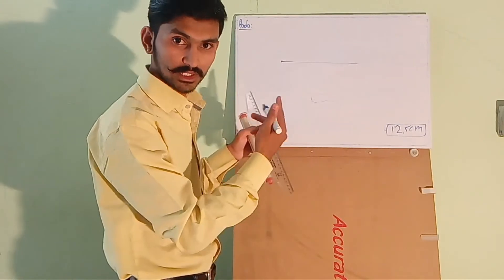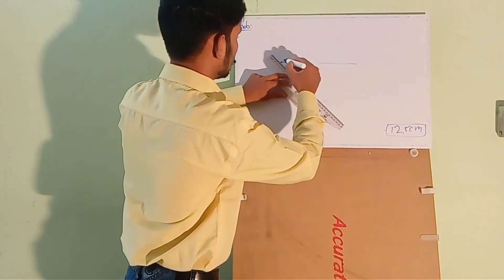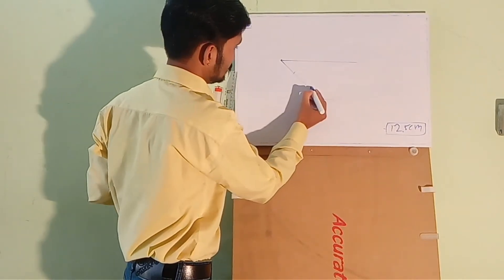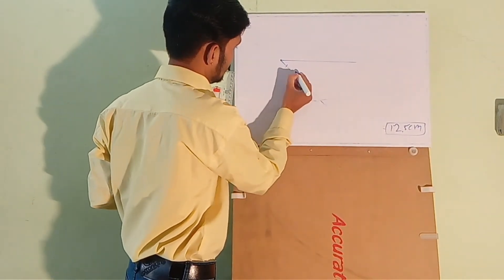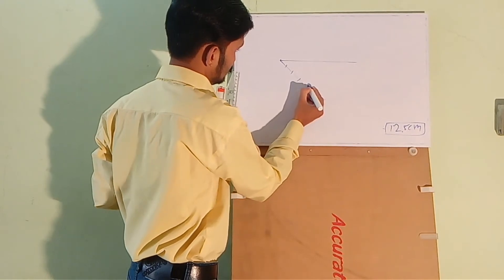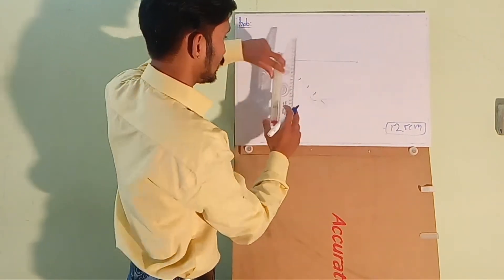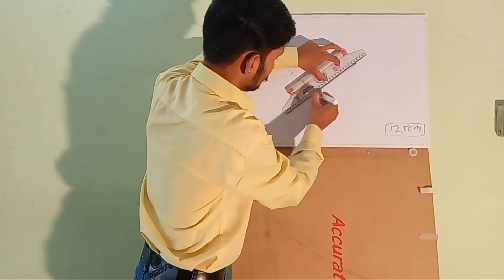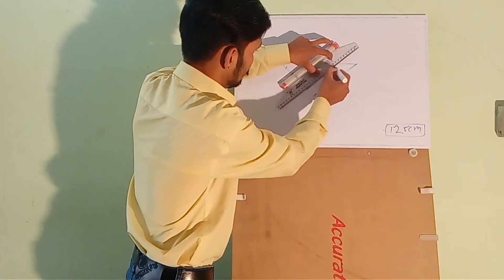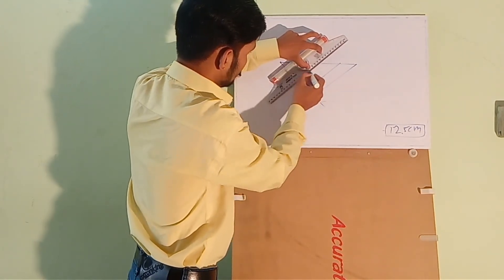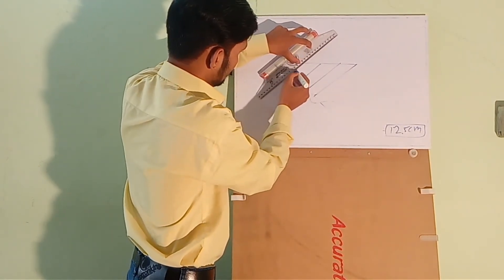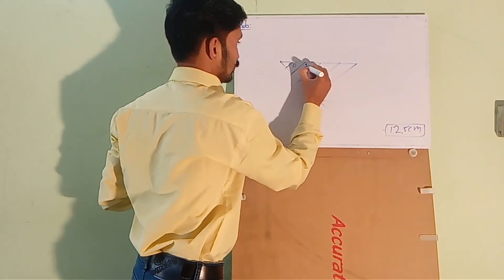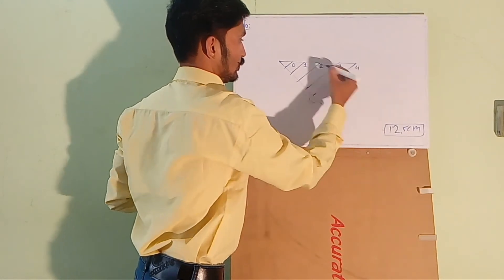So draw another line from the same point. Divide this line into 5 equal parts. 1, 2, 3, 4 and 5. Join this point to this point. Draw parallel lines from each point. Okay, so we have 0, 1, 2, 3 and 4.